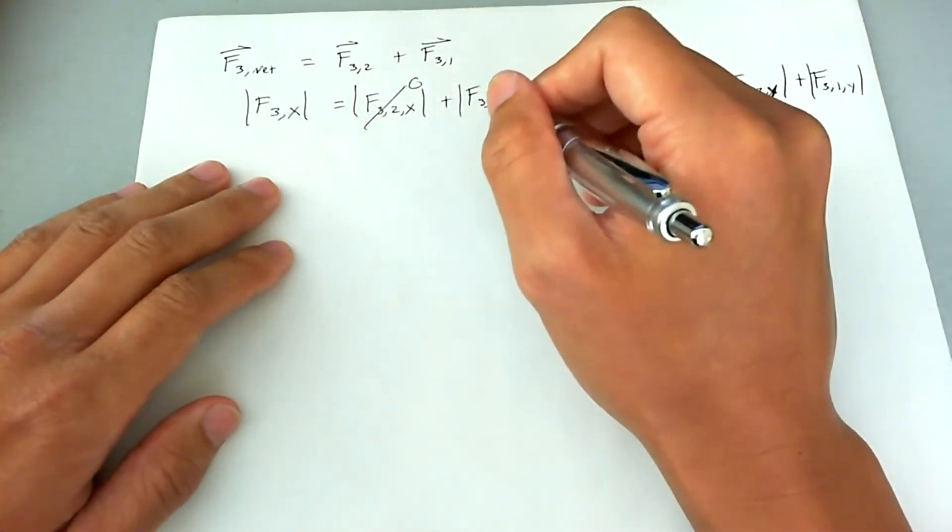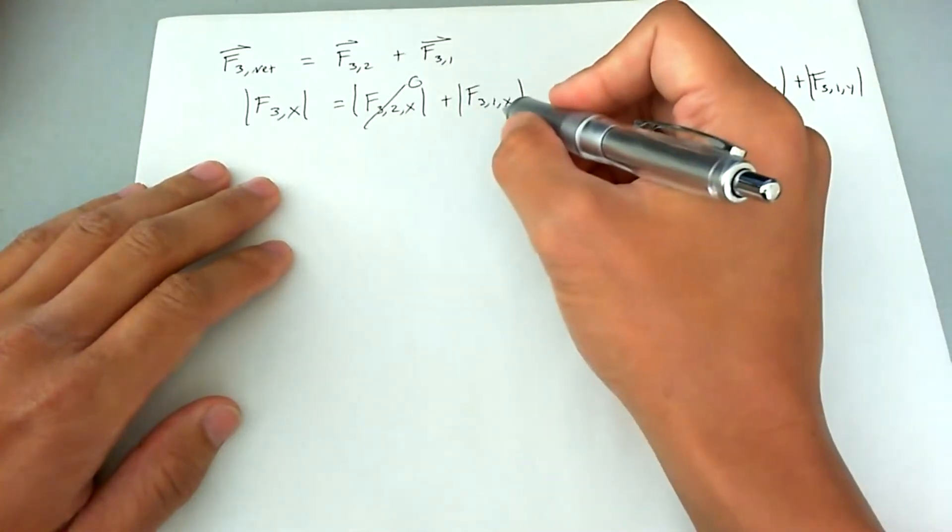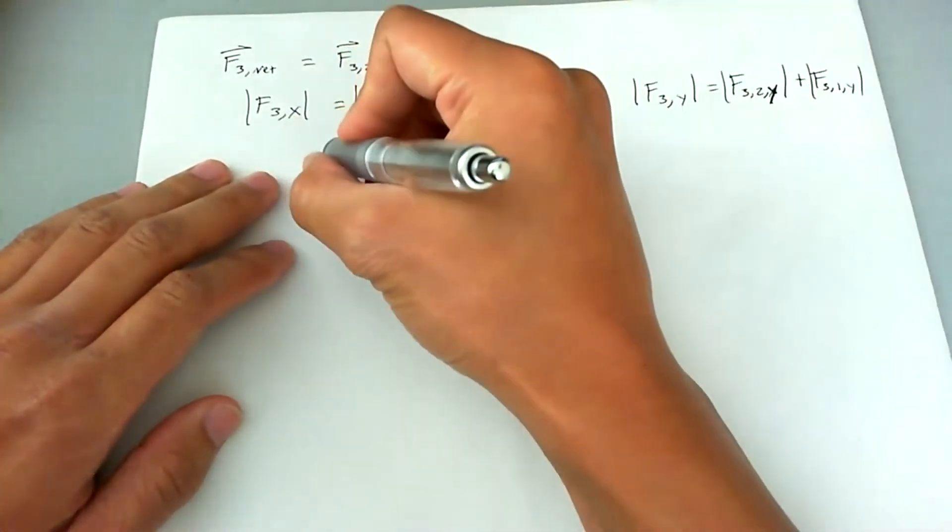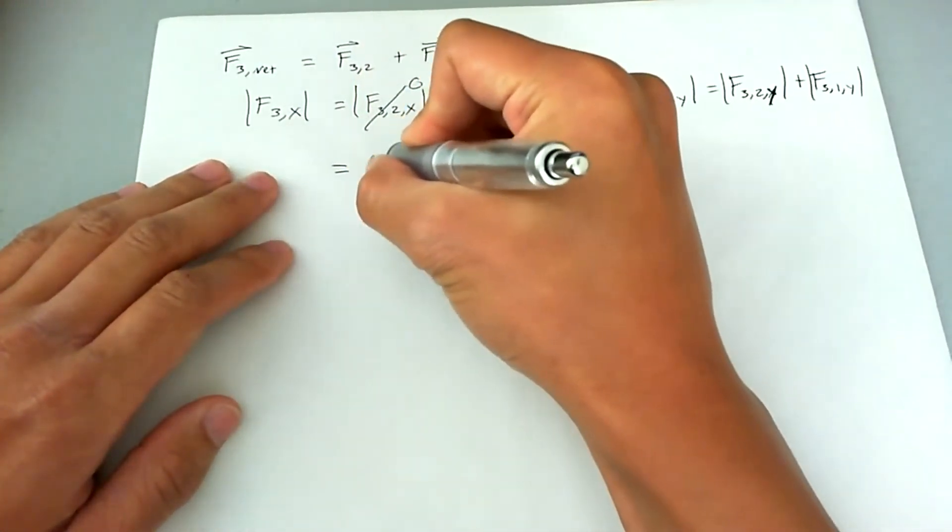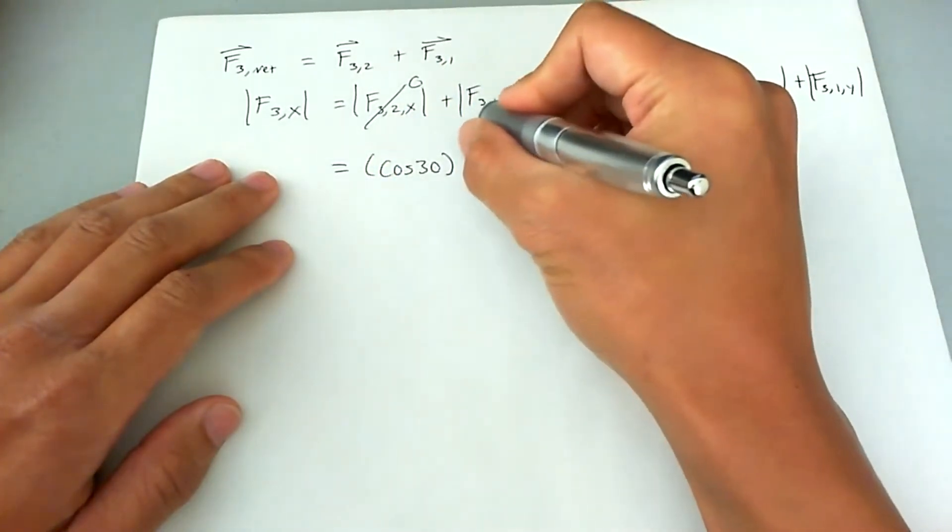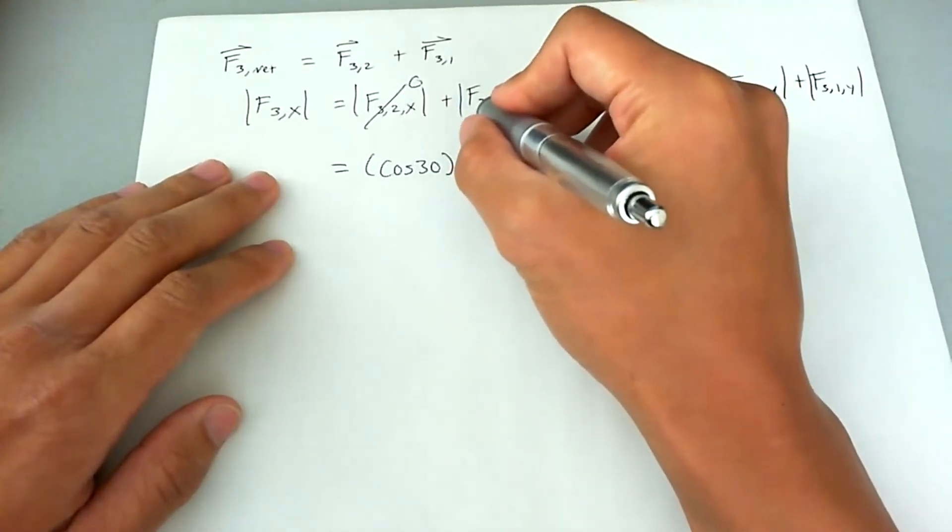So basically using SOHCAHTOA, the method for finding which trigonometric function to use in this situation, we see that we're going to have to use cosine of 30 multiplied by the force acting on or the total force acting on charge three due to charge one.